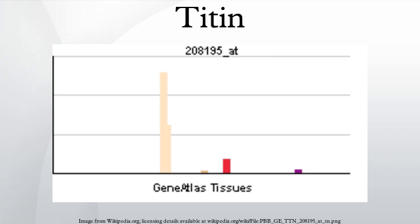Furthermore, the gene for Titin contains the largest number of exons discovered in any single gene, as well as the longest single exon. The human gene that encodes Titin is found on chromosome 2 and contains 363 exons.